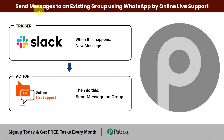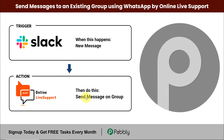In this video we are going to understand how to send messages to an existing group using WhatsApp by online live support. My objective is that I have an existing group on WhatsApp and I want to send messages through some other application. We have taken the example of Slack, and every time a new message is posted on the Slack group, the same message will automatically reflect on the WhatsApp group. We are going to integrate these two applications using Pably Connect software.